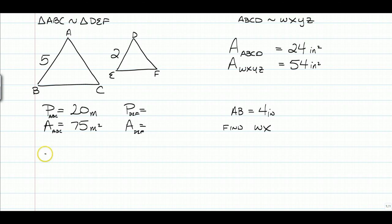So to do that, we just want to start with our basic side ratio. So the ratio of sides is 5 over 2. And we're going to set that equal to the ratio of the perimeters. So the perimeter of triangle ABC is 20 over the perimeter we're trying to find of triangle DEF.